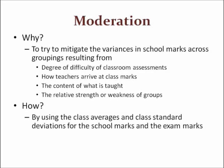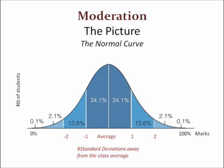Moderation involves changing the school marks of a group of students to reflect their performance on the uniform exam. The actual calculation uses the class average and standard deviations of both the school marks and the exam marks. But first, a quick refresher on what a normal frequency distribution or bell curve looks like. It is this curve that is the statistical basis for the calculation that changes the students' marks.